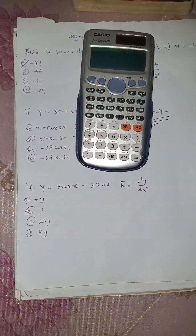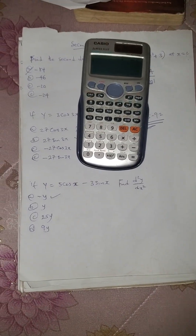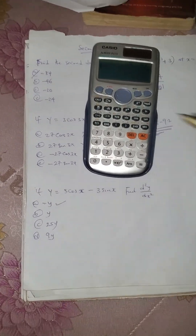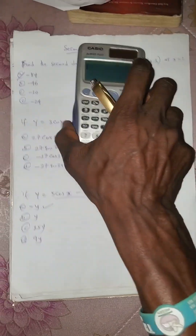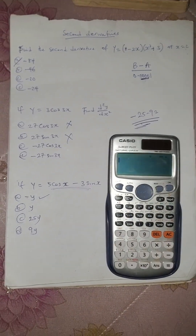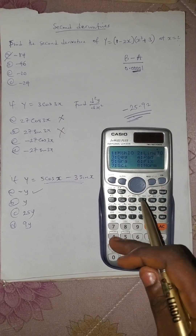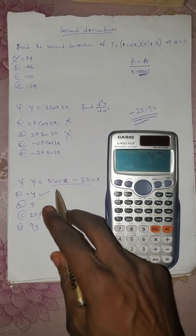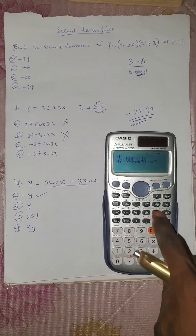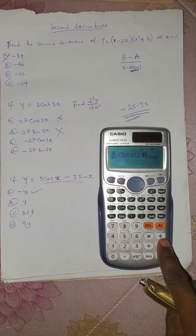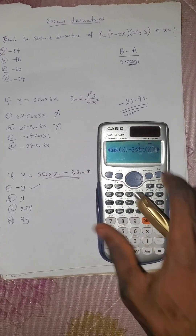The answer to this one is option A. Let me give you the method. Take your calculator to be in radian because it contains cosine. Press shift, then enter: 5, then cosine, alpha x, then minus 3, then sine alpha x. Close the bracket.